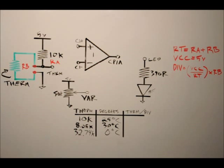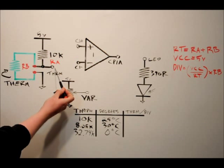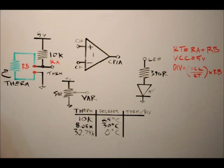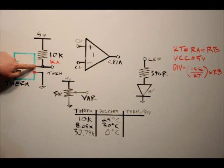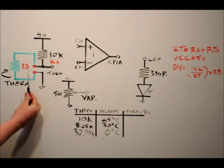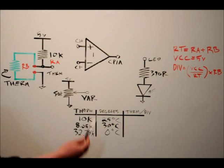The datasheet gives us a range of resistances per temperature, and I've put three examples here. What we have to do is calculate what we'll see at the THRM line on the main pin block, because what we have is a voltage divider. We've got a fixed 10k ohm resistor, and when we take our thermistor plug-in and plug it in on the board, we have another resistor in series.